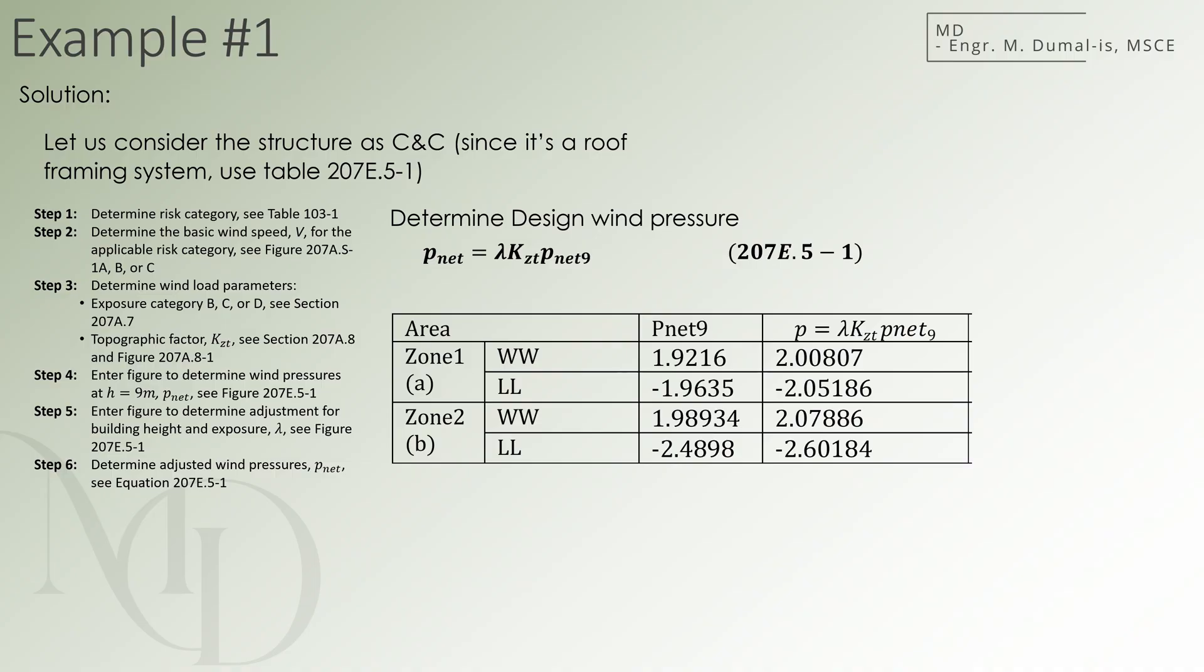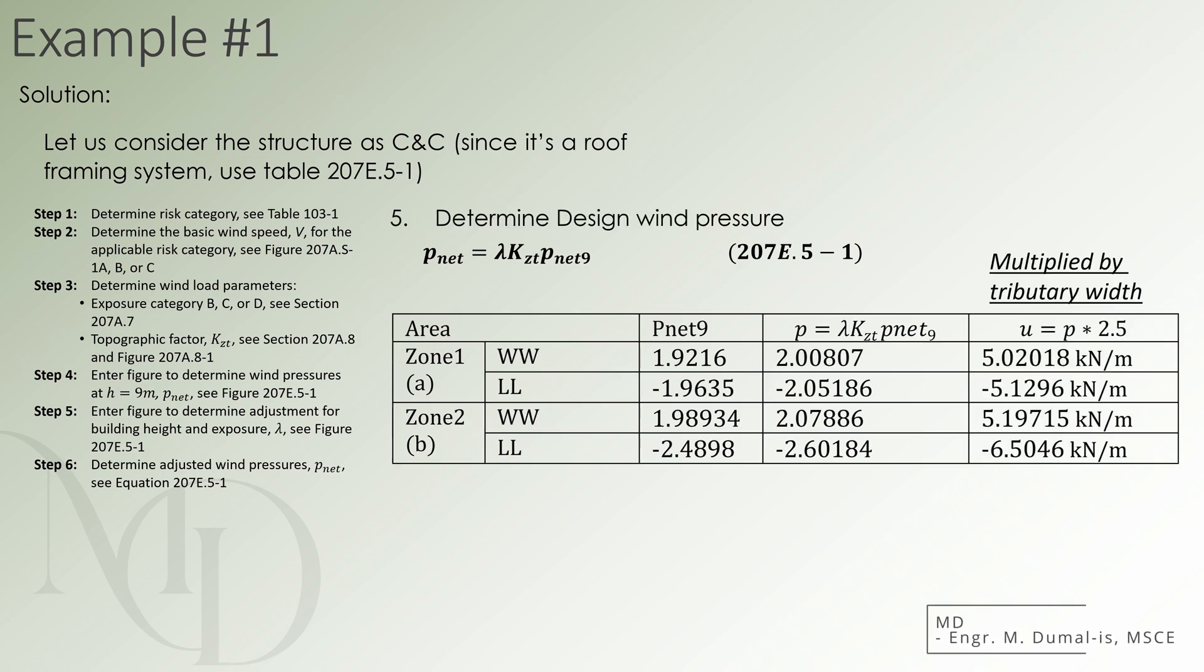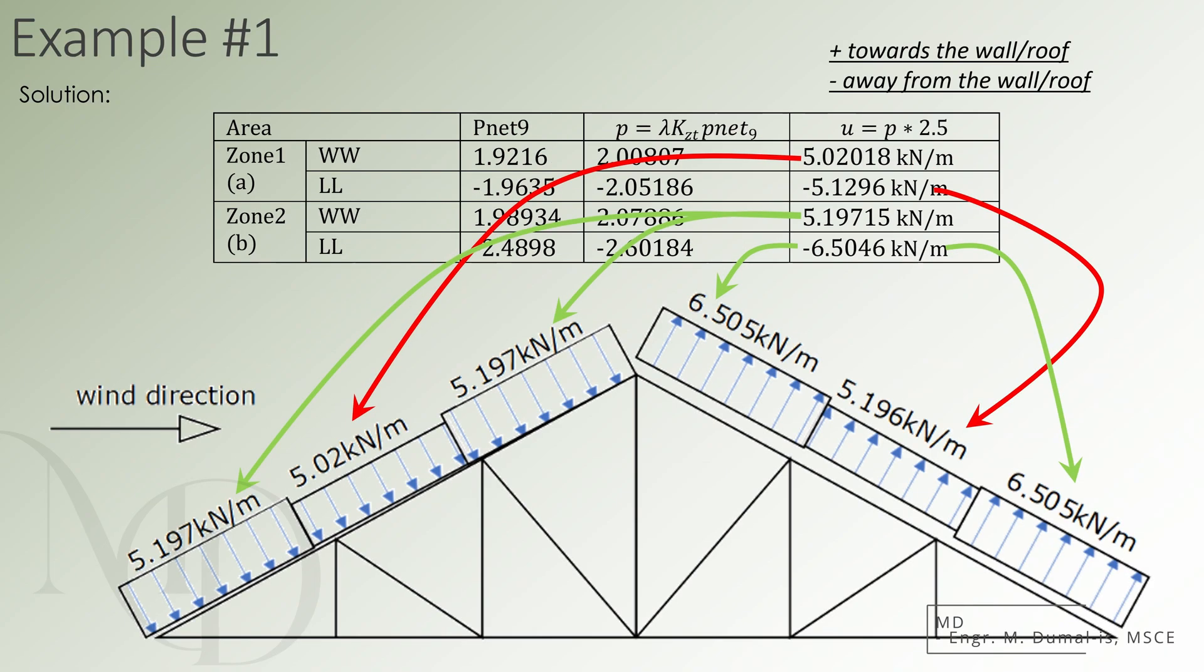Afterwards, we will convert p-net 9 into the actual p-net value by multiplying p-net 9 with the values of lambda and kZt. And then, in order to apply the pressure to the truss, we need to convert it into line loads or distributed loads. We do this by multiplying the pressure by the tributary width, which is 2.5 meters.